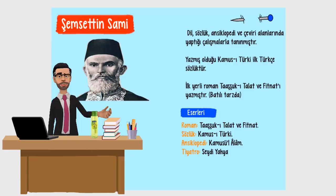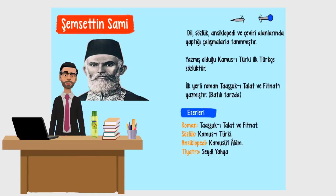Şemsettin Sami'nin eserleri — Roman: Taaşşuk-ı Talat ve Fitnat. Sözlük: Kamus-ı Türki. Ansiklopedi: Kamus-ül Alam. Tiyatro: Seydi Yahya.